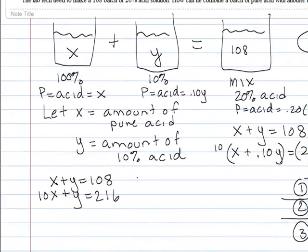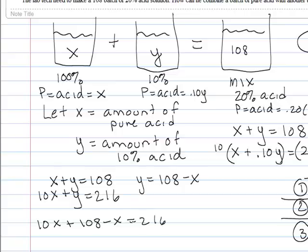And then I'm going to substitute, I'm going to solve, subtract x on the first one, both sides on the first one. And then I'm going to get that, and I'm going to plug this into my second one. Instead of a y, I'm going to write 108 minus x. And then combine like terms.